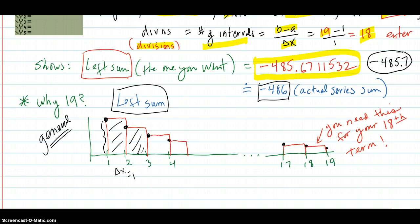This is the second value of the series. This is the third. This is the fourth. This is the 17th. You need to go beyond 18 because you're using a left sum. You need this right here to get the value for the 18th term. That's why you have to go to 19 because you're using a left sum.